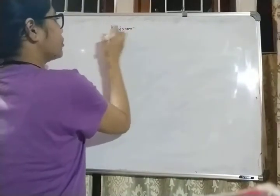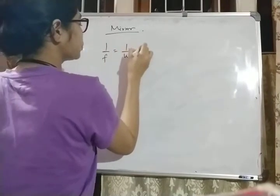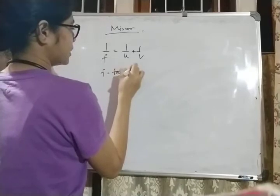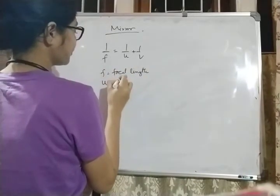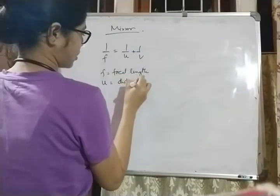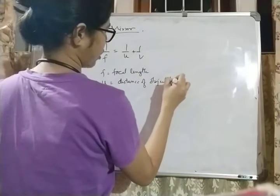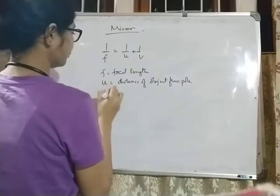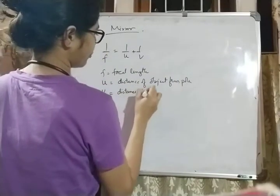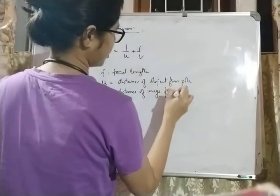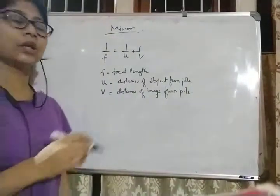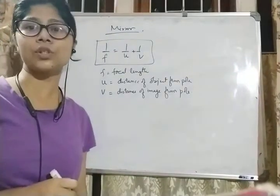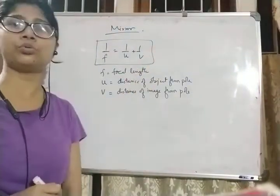Mirror formula — we will solve a lot of numericals using this, so it is very important. The mirror formula is: 1 by F equals 1 by U plus 1 by V, where F is the focal length, U is the distance of the object from the pole, and V is the distance of the image from the pole.